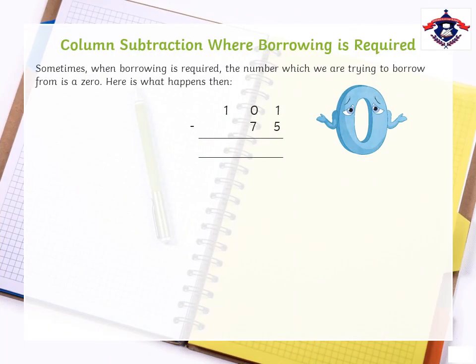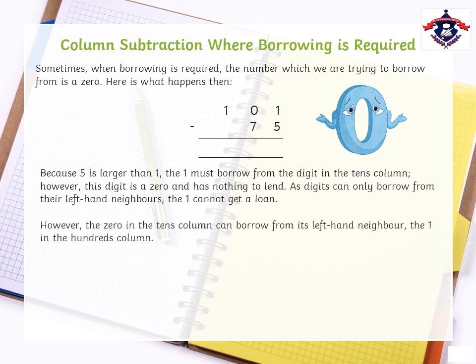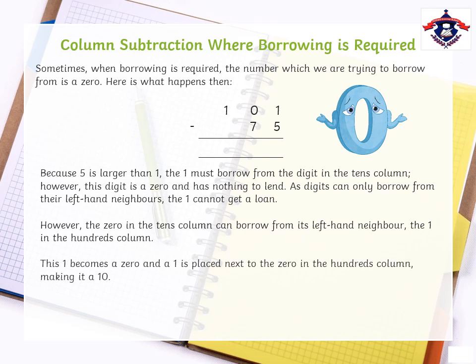Often, borrowing becomes difficult when the number we are trying to borrow from is 0. Because 5 is larger than 1, the 1 must borrow from the digit in the tens column. However, this digit is 0 and has nothing to lend. Because digits can only borrow from their left-hand neighbors, the 1 cannot get a loan. However, the 0 in the tens column can borrow from its left-hand neighbor, which is the 1 in the hundreds column. This 1 becomes a 0 and a 1 is placed next to the 0 in the hundreds column, making it a 10.